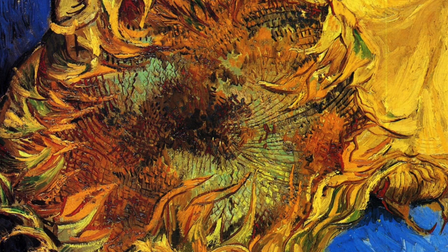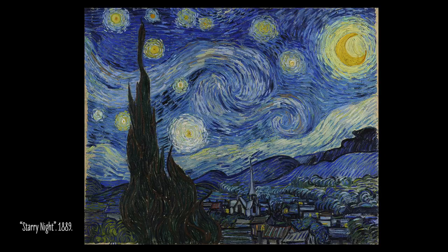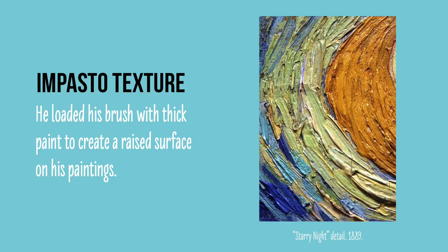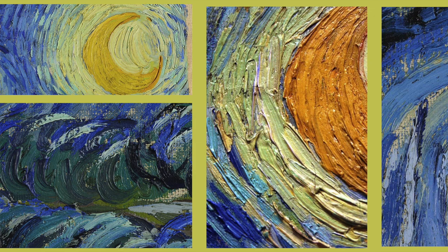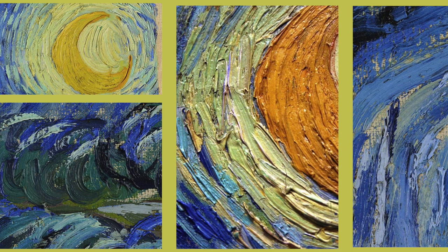One of his most famous paintings called Starry Night was created by using impasto texture. He used a thick application of oil paint in a very expressive manner. The impasto texture resulted in a raised surface as shown on these detailed shots of the Starry Night painting and helped express Van Gogh's emotions.